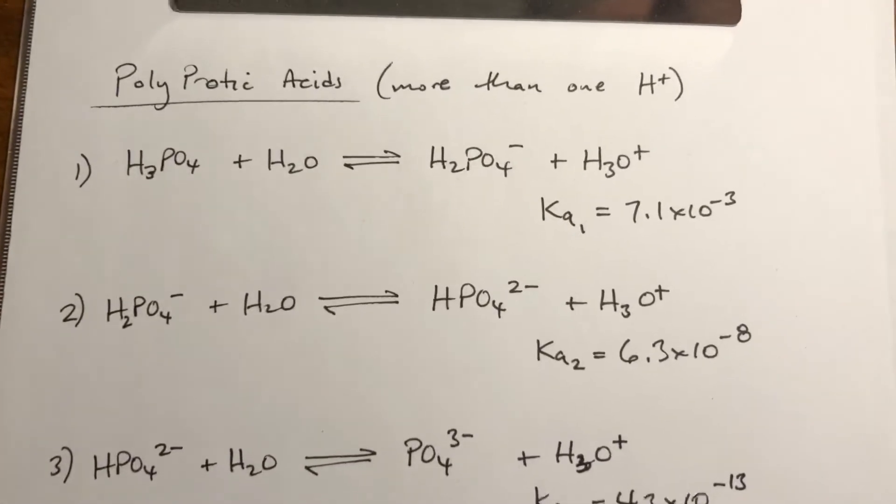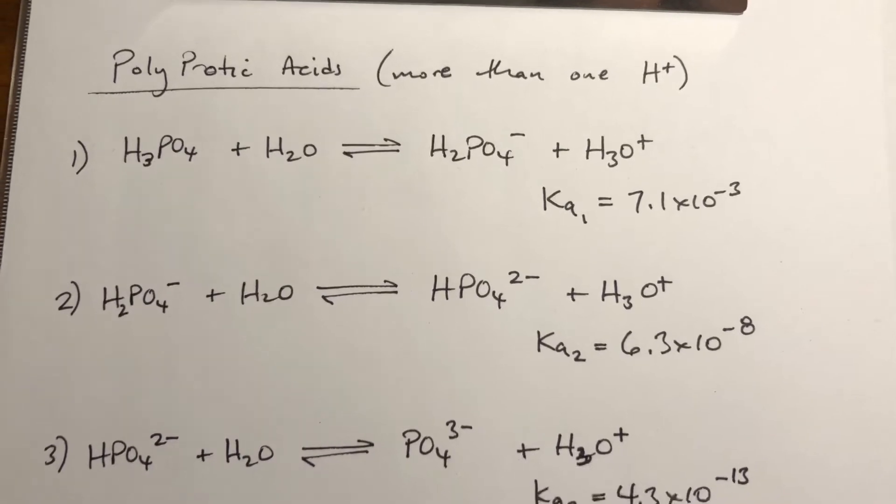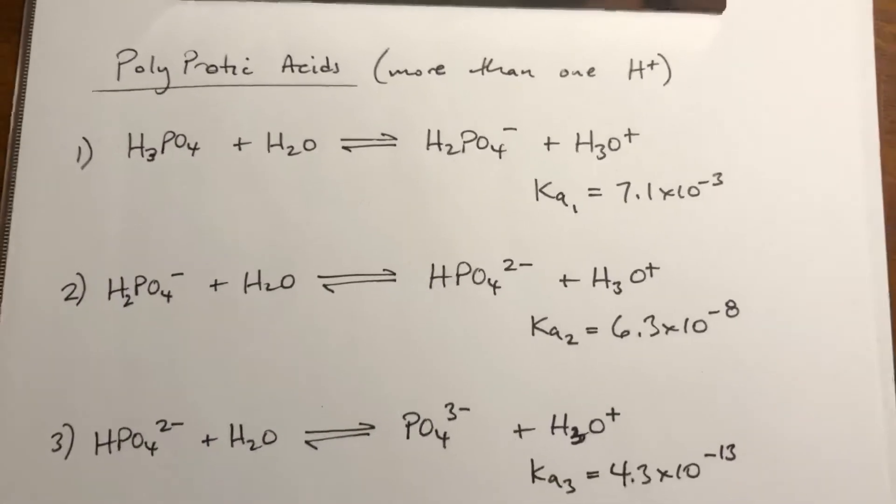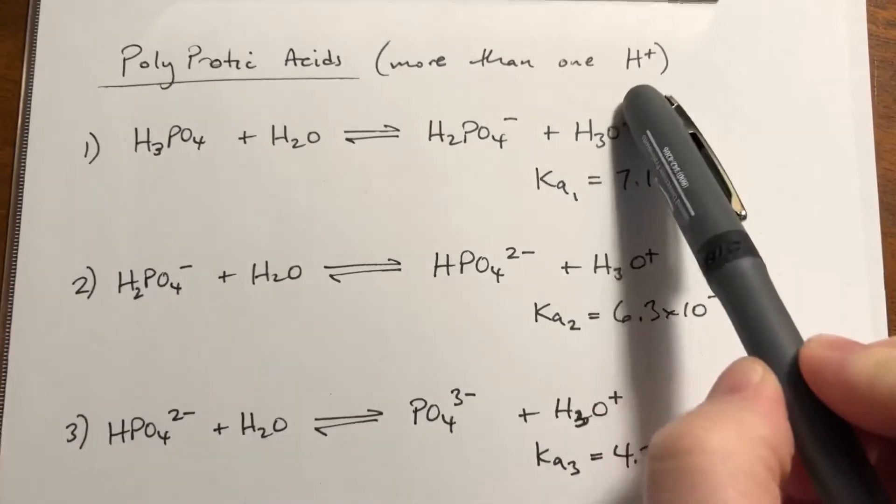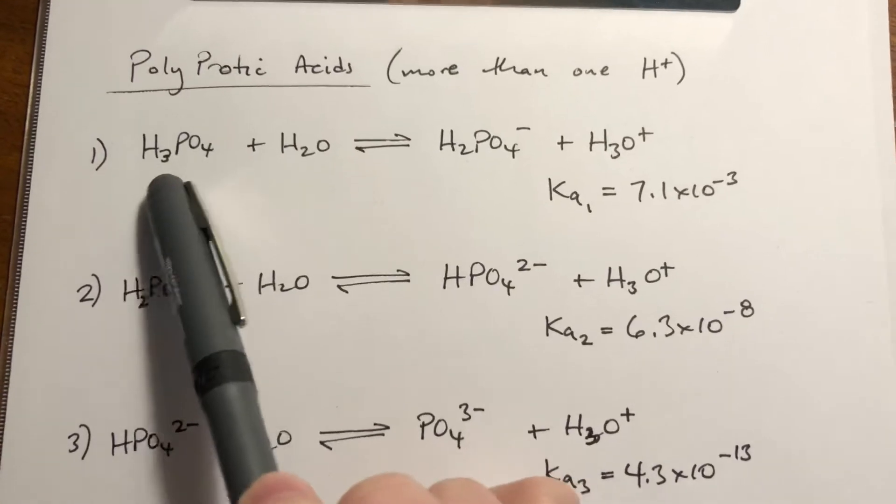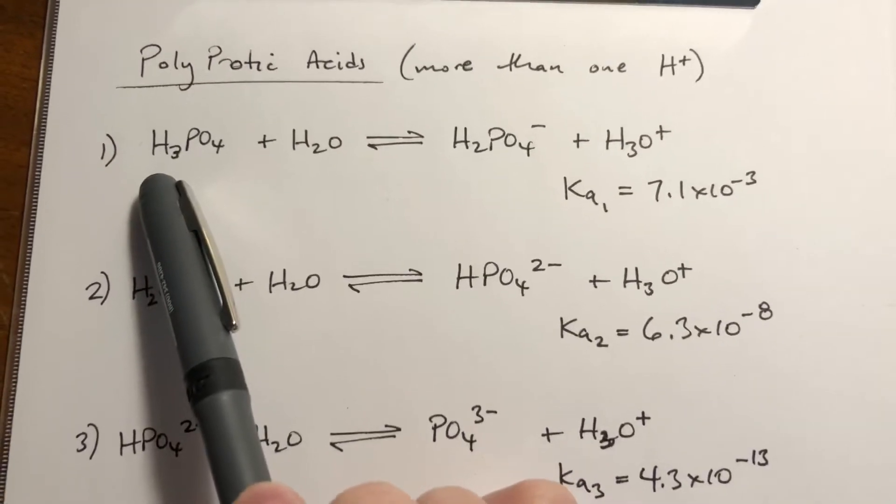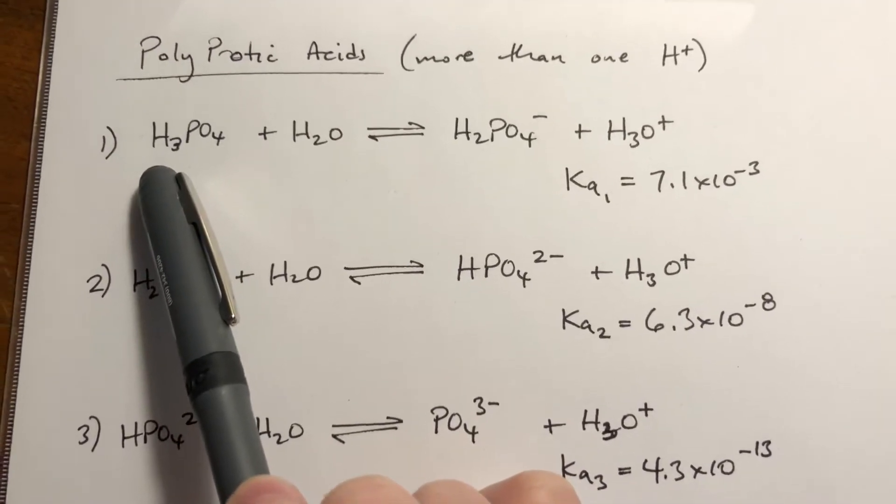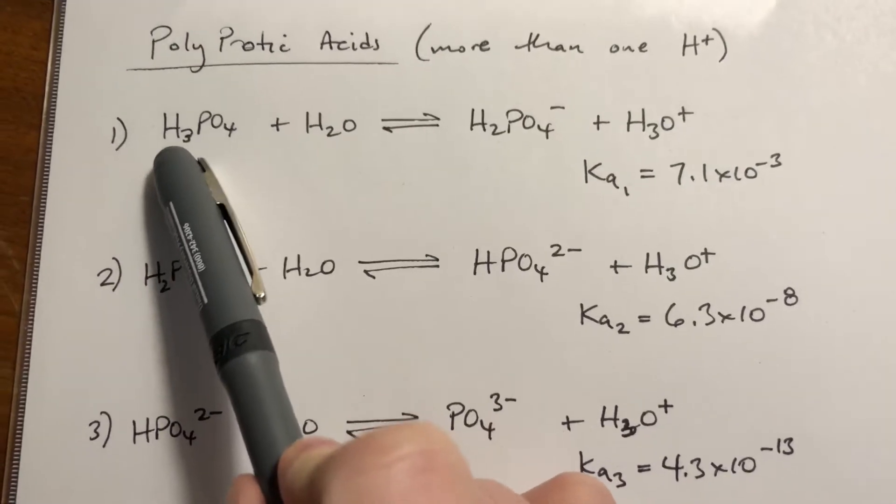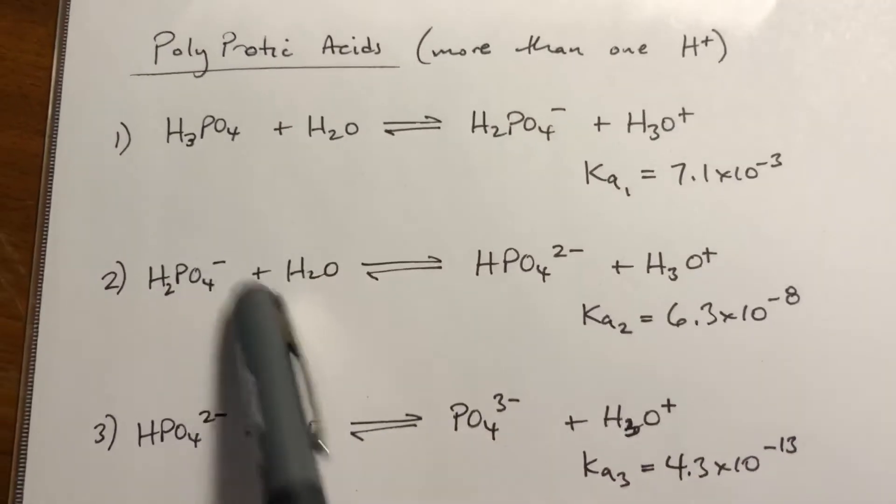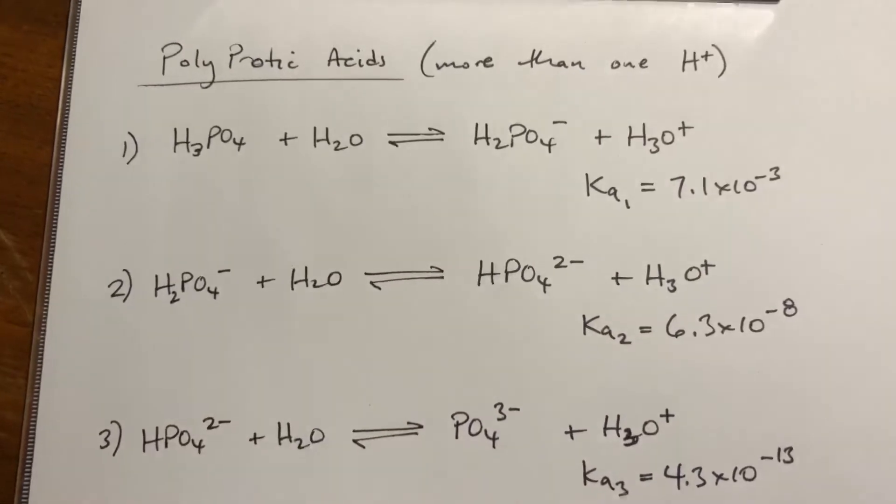Okay, we need to talk about polyprotic acids. What this means is this is an acid that has more than one H plus to donate. So for example, phosphoric acid has three protons that can come off. They don't all come off in one fell swoop. You get progressive removal of each of them.